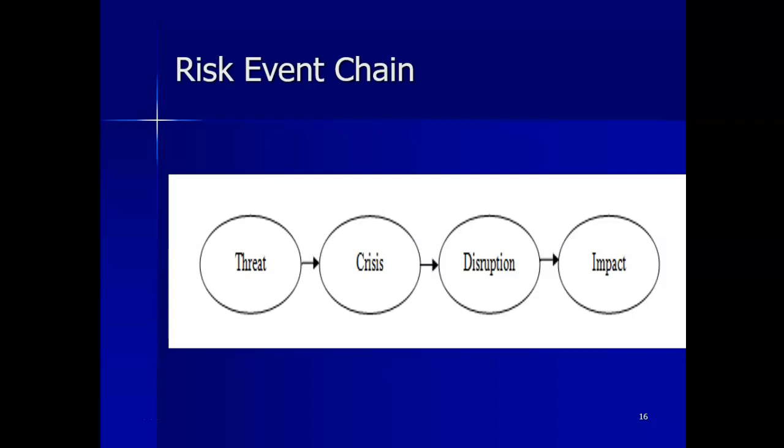As an example, fire is a threat and a crisis would be a fire affecting a particular facility. A fire can cause a disruption of the processing facility for a lengthy period of time, and that disruption can result in an impact of asset damage and revenue loss. The paradigm of the risk event chain provides flexibility in the level of detail used in analyzing risk. Using a broad view during an initial study, an impact can be thought of as resulting from a threat without explicitly studying the transitions through a crisis disruption.